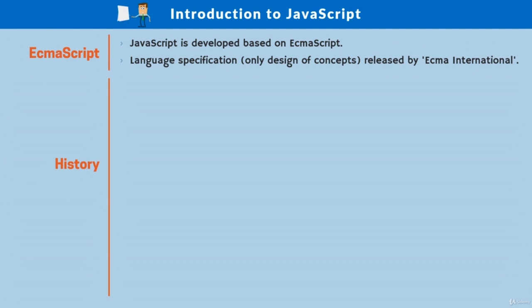JavaScript is also called ECMAScript. ECMAScript is the specification of W3C — based on it, browser development companies implement the language as JavaScript. The specification without implementation is called ECMAScript, and when practically implemented in browsers, it is called JavaScript. ECMAScript specifications are still released by ECMA International, and browser companies like Google and Microsoft implement it. The version numbers of ECMAScript and JavaScript are exactly the same.